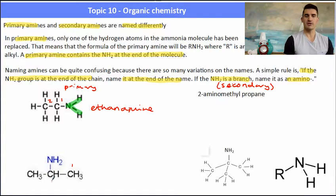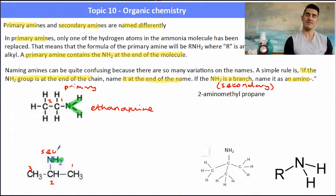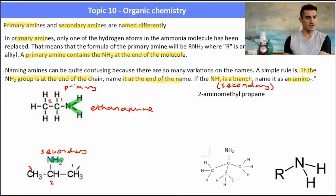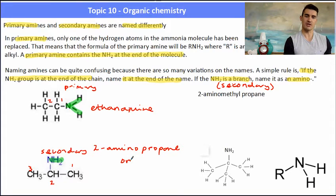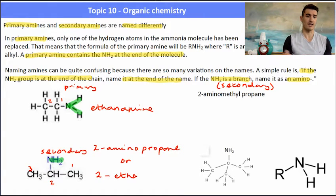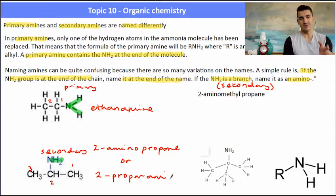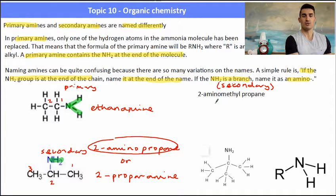If we have a look at the one below it, here we have the amine group in the middle of the chain, so I would refer to this amine as being a branch. When we have a secondary amine we name that as 'amino', putting amino at the front rather than at the back. I need to put a number here because I don't know where that amine group is, so I name it as 2-aminopropane. Somebody else could name this as propan-2-amine — I believe the correct way is the first one. Stick to that rule: if it's at the end name the amine at the end; if it's in the middle name it as amino.